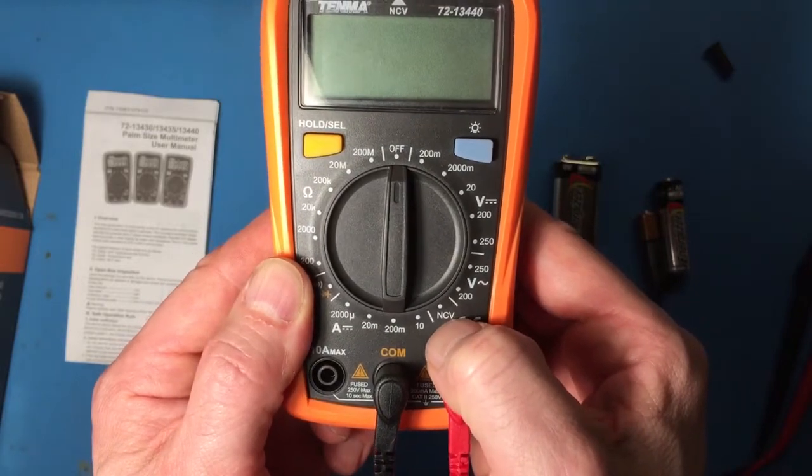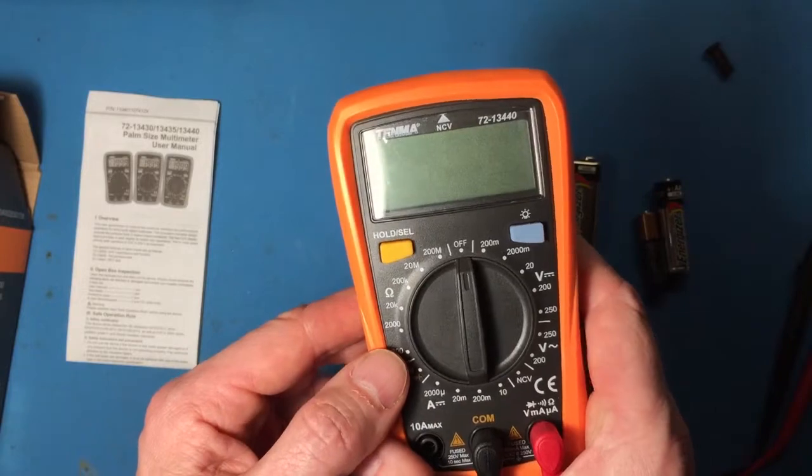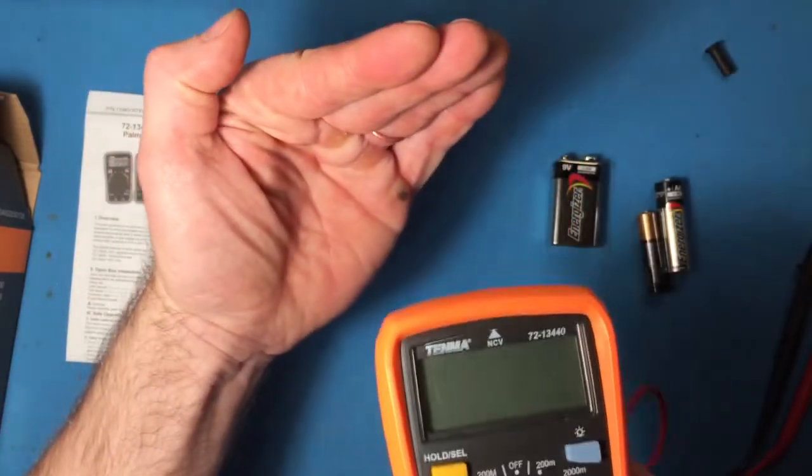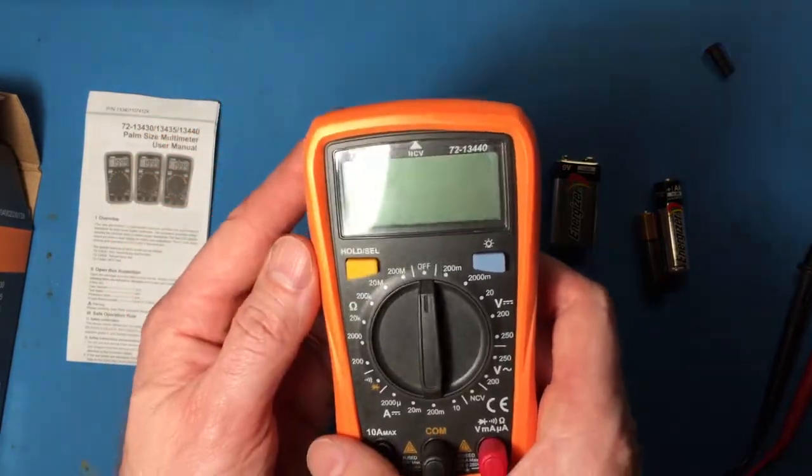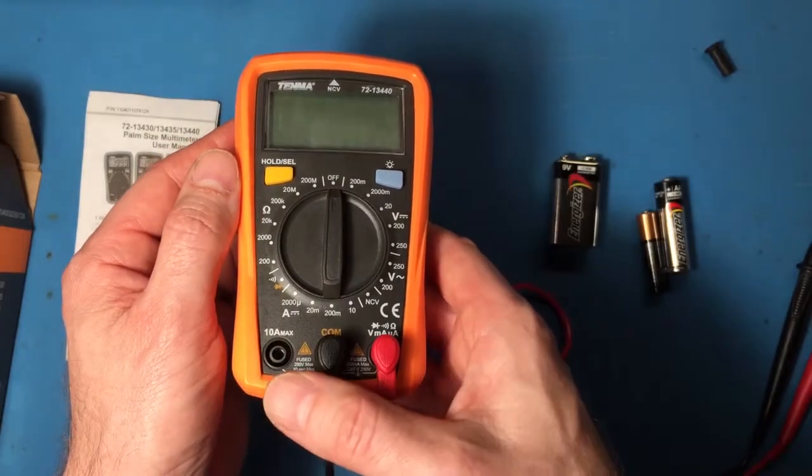And NCV means non-contact voltage measurement. That would be good, say, if you're trying to measure electrical wires in a wall. You can see this little arrow right here that says that if I put the meter up to the wall and there is a live wire in there, it will detect that. So it's kind of a cool feature. Probably won't use it in this class, but that's okay.